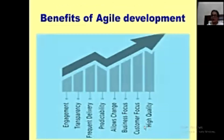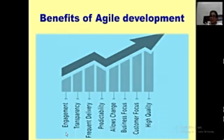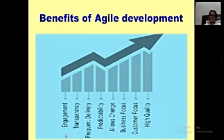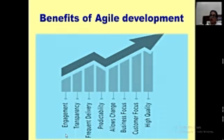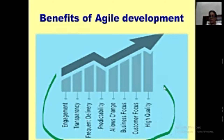Benefits of Agile development. There is a diagram here which is easy to understand. First benefit: engagement of all the people or all the team members. Second: transparency, which is very important in any project development. Third: frequent delivery - with every iteration you have a frequent delivery of a working model. Fourth: predictability. Fifth: allows change - dynamic systems where requirements can be refined anytime and accommodated in the next increment. Sixth: business focus - the system developed should be a solution for business needs. Seventh: customer focus - the customer is always involved and their feedback is given importance. Finally: high quality product is developed through Agile development.